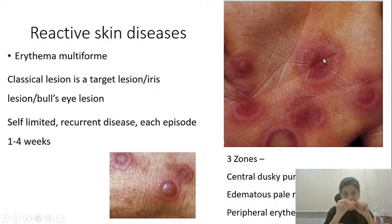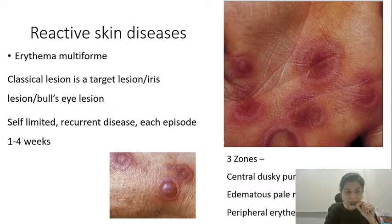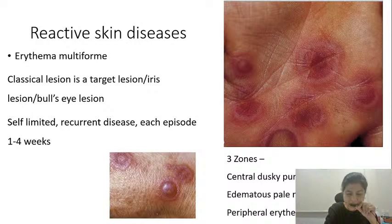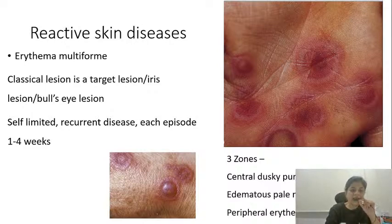Erythema multiforme can be divided as either erythema multiforme minor or erythema multiforme major. Erythema multiforme minor is not associated with any mucosal involvement; there is involvement of the palms and soles, and most of the times the lesions are just limited to the palms and soles. While in cases of erythema multiforme major, usually the lesions are more extensive — in addition to the palms and soles, there can be other lesions on the forearms and lower legs, and there is one mucosa involved. It is a self-limiting recurrent disease and each episode lasts for around one to four weeks.